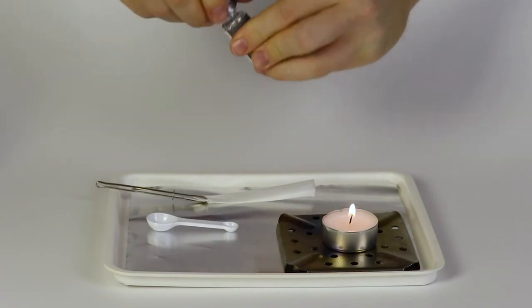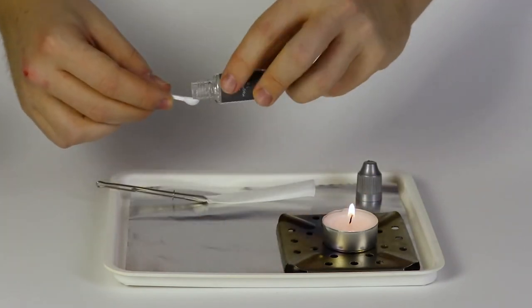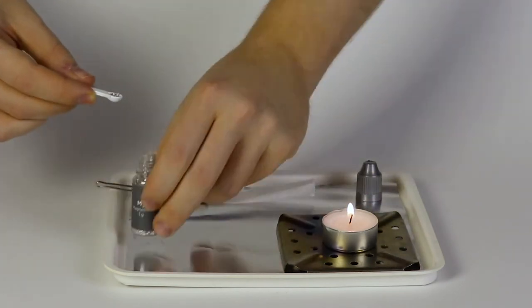Pour one small spoonful of magnesium into the fold of the paper. Spread it all over its length.